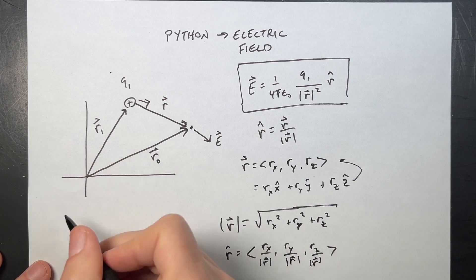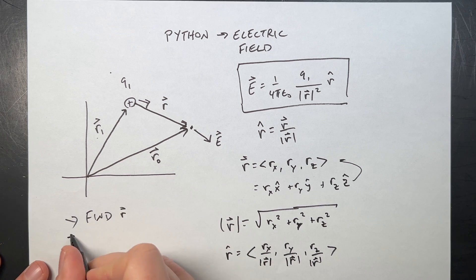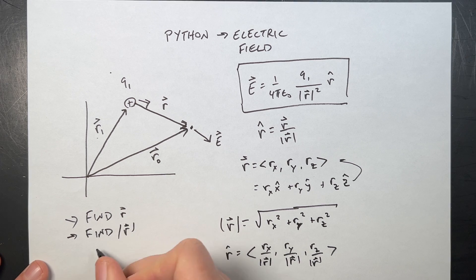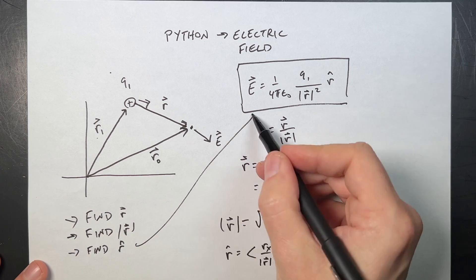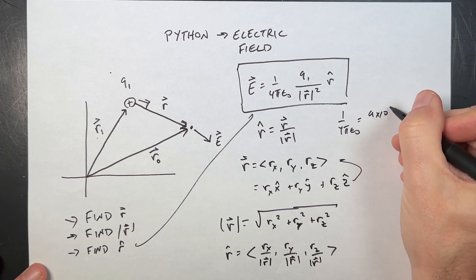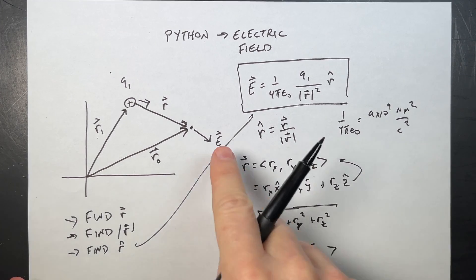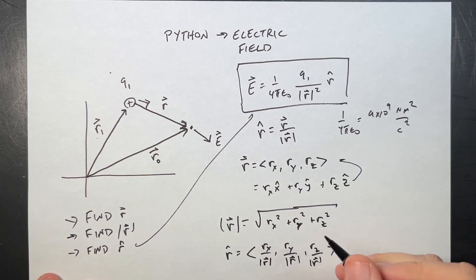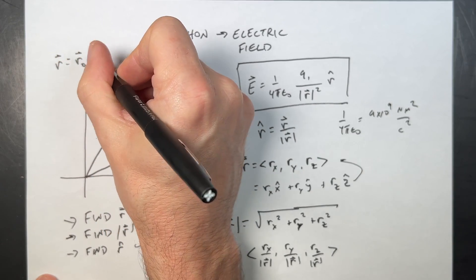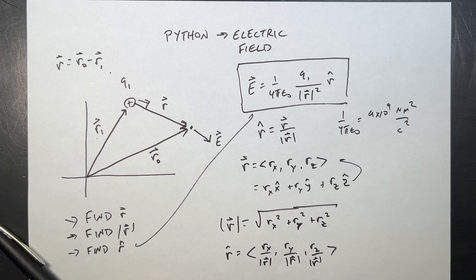That's a lot of work, so here are the steps: once we know R1 and R0, first find R (which equals R0 minus R1), then find the magnitude of R, then find R-hat, and then plug everything in. Note that 1 over 4π epsilon-naught equals 9×10⁹ N·m²/C². You can do all this in a calculator, but it's simpler to use Python as your calculator.